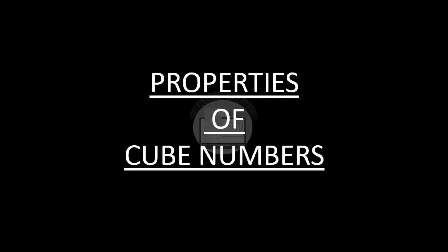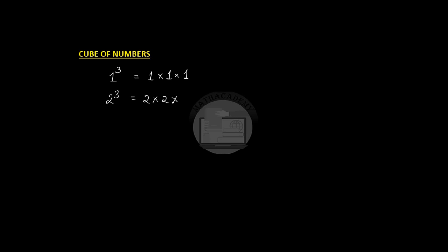Hi, in this video we will see what are cube numbers and some of the properties of cube numbers. So what do we mean by cube of a number? If I write one cube it means one multiplied to itself three times. Two cube is two multiplied to itself three times. Similarly, if we have x cube then we can write it as x times x times x. So cube of any number is obtained by multiplying that number to itself three times.